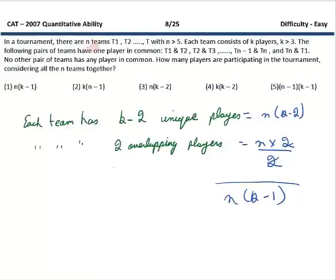In this question there are N teams and each team has K players. Each team shares one common player with the team adjacent to it. For example, T1 shares one player with T2, T2 with T3, and so on, and TN with T1 as well. We have to find the total number of players in this tournament. Each team has K minus 2 unique players, so total becomes N times K minus 2. Each team has 2 overlapping players, so total overlapping becomes N times 2. Divide that by 2 because you don't want to double count, then add to get the answer which is N times K minus 1. This will be an easy question in this paper. That concludes the number system section. Let's move on to algebra.